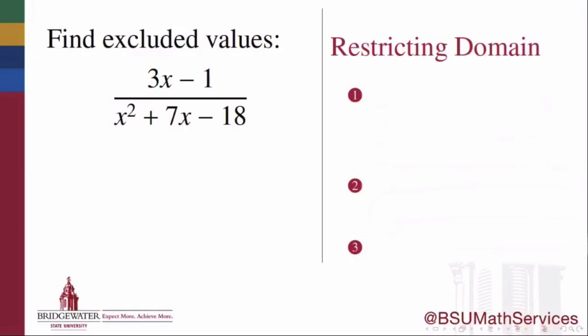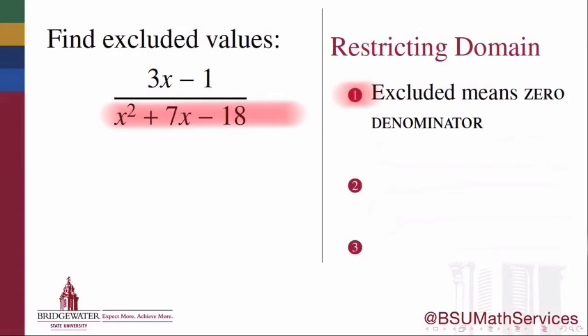We can do that first by reminding ourselves that to exclude a value from a rational expression is done because we want to make sure that the denominator is not permitted to equal 0. So the entire question of finding the excluded values of this rational expression is going to turn on us finding where this denominator x squared plus 7x minus 18 becomes 0. Any value of x for which that happens must be excluded from the possible values of x at which we can evaluate this rational expression. Notice also that the question of excluded values has only to do with where the denominator becomes 0, and has nothing to do with any properties of the numerator of this rational expression.